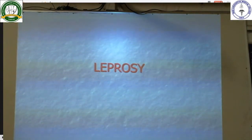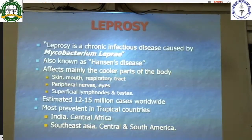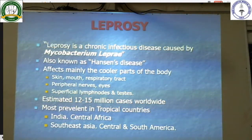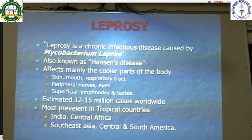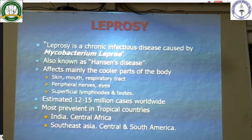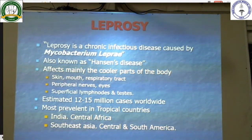Next, we have leprosy. Leprosy is a chronic infectious disease caused by Mycobacterium leprae, also known as Hansen's disease. It affects mainly the cooler parts of the body — skin, mouth, respiratory tract, peripheral nerves, eyes, superficial lymph nodes, and testis. It is estimated there are 12 to 15 million cases worldwide, most prevalent in tropical countries like India, Central Africa, South East Asia, and Central and South America.